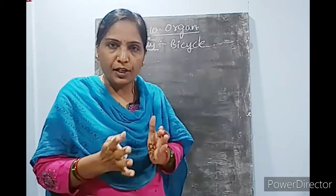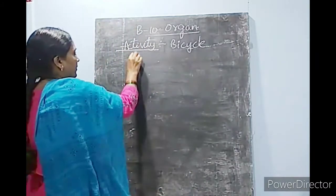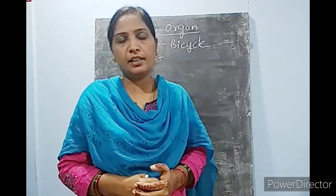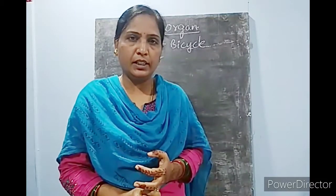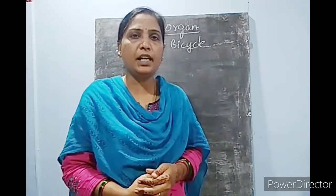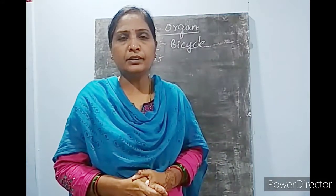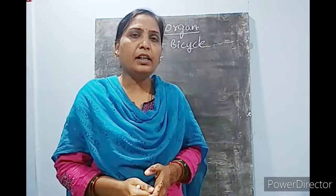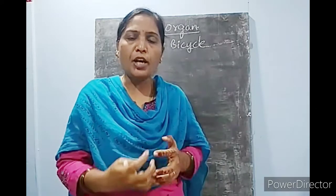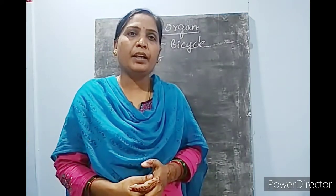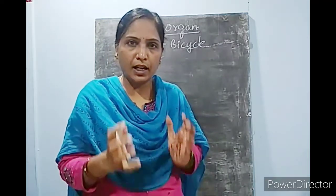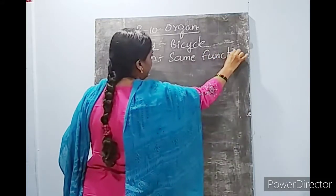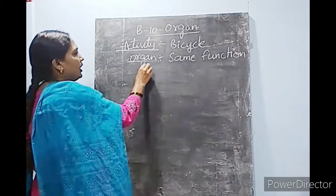Same way, in our body there are different organs. An organ is an internal part. In the last lesson, you learned about internal organs and external organs. Internal organs means the organs which are present inside our body. An organ is a part which helps to carry out functions in our body. There are different organs and they join each other to carry a particular function. The organs which are doing the same function will all join together and they form the organ system.